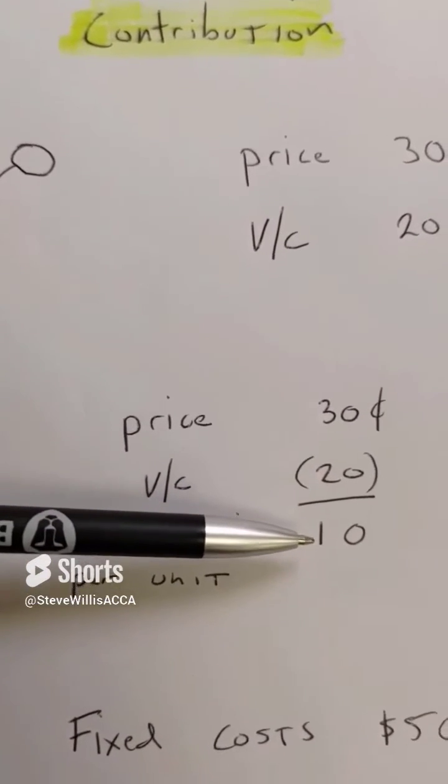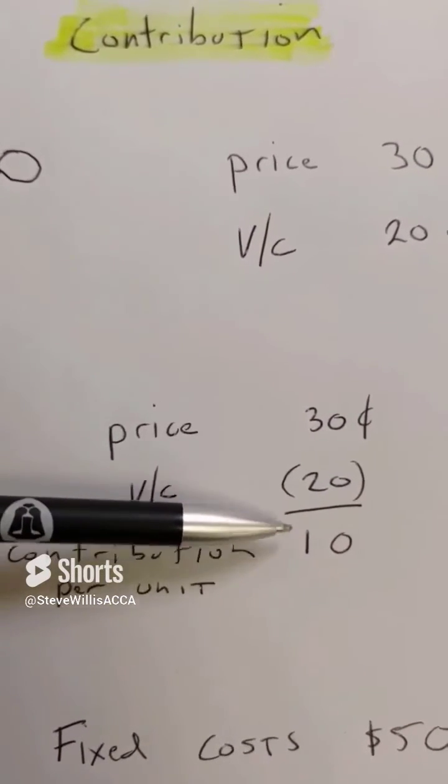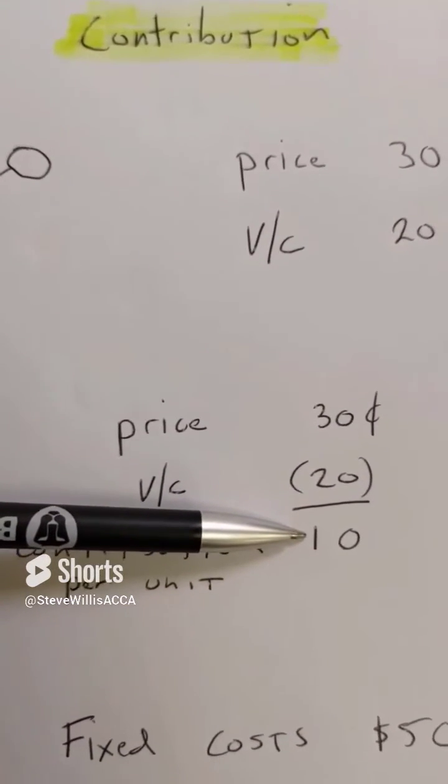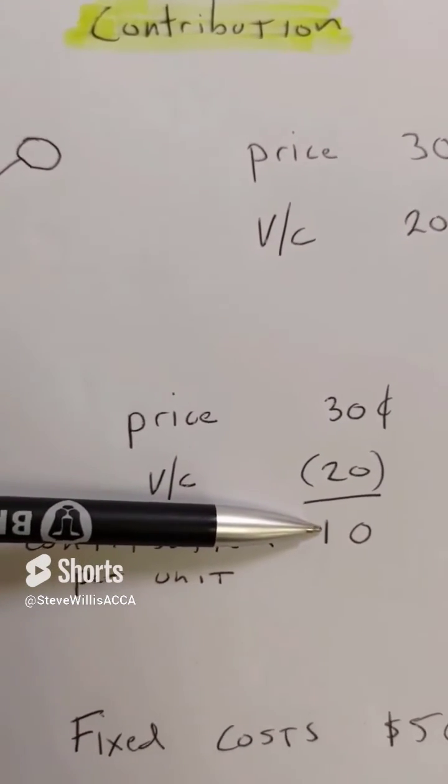So what's left over is 10 cents after I cover my variable cost. 10 cents contributes to my fixed costs and my profit.